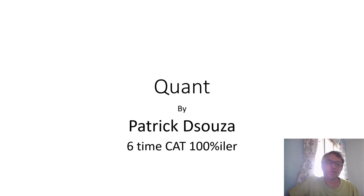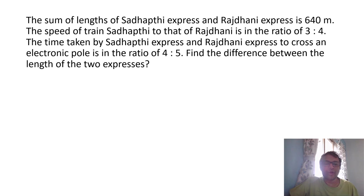We begin with one more session of POTD. The rule supply is the same. You have to try to solve before you look at the solution. Here they are given sum of the lengths as 640 meters. They are given ratio of the speed as 3 is to 4 and they are given ratio of time taken as 4 is to 5. We want difference in the lengths.